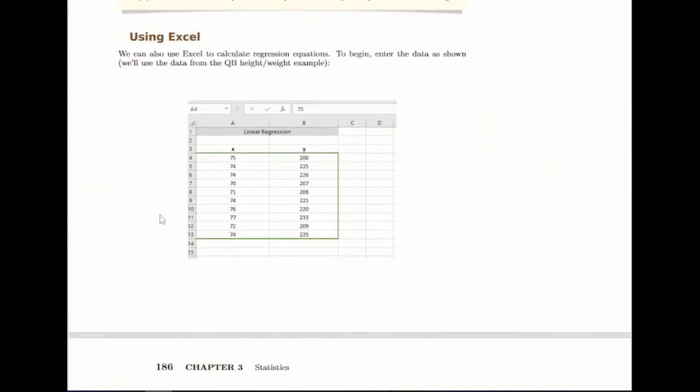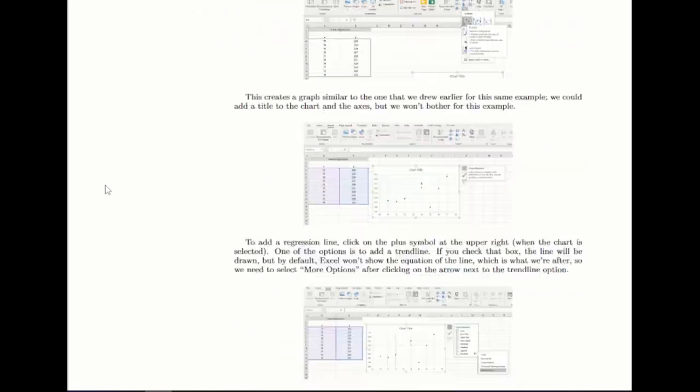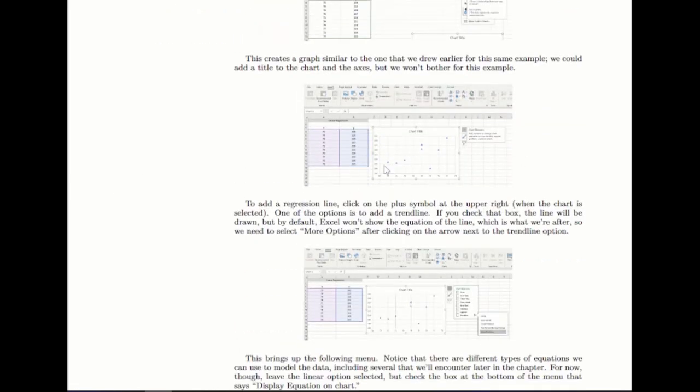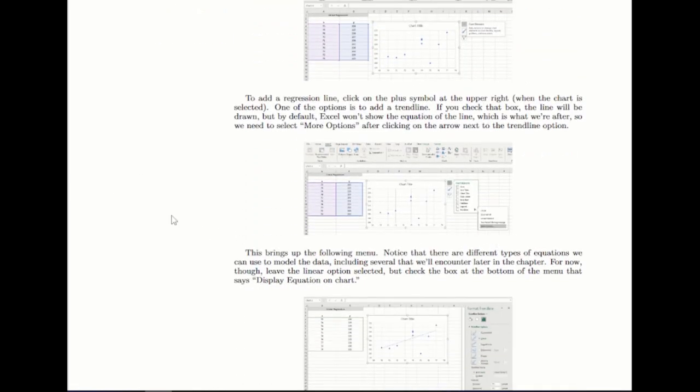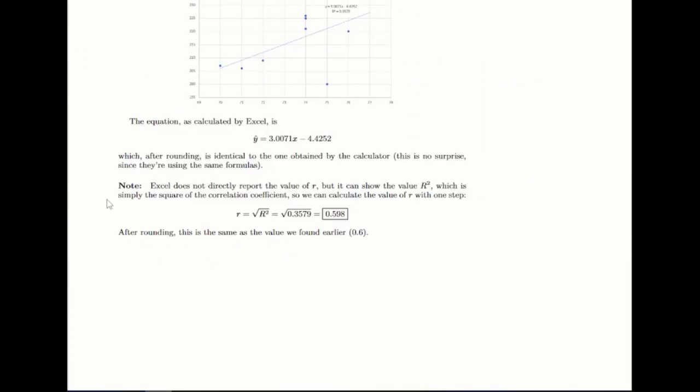Then at the end, there's a quick section on how to use Excel to do the same thing. Again, we saw this in Chapter 2 as well, but you can go in and add a scatterplot, and once you do, there's an option to add a regression line and show the results there. So you can go through and follow that. If you would like to use Excel for your homework or for the project or test, feel free to do so following these examples.